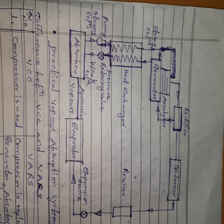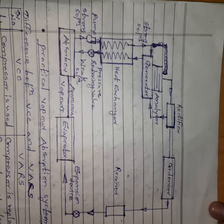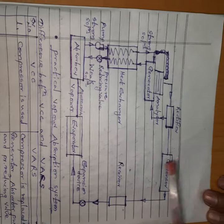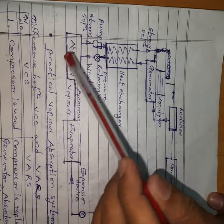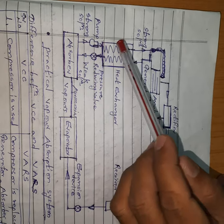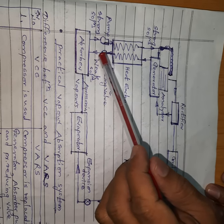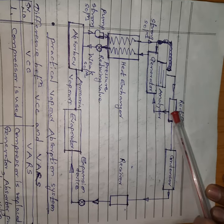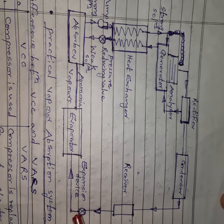Most components are the same as in the vapor compression system. Starting from the evaporator: there is the evaporator, absorber, pump, heat exchanger, generator, pressure-reducing valve, analyzer, rectifier, condenser, receiver, and expansion device.